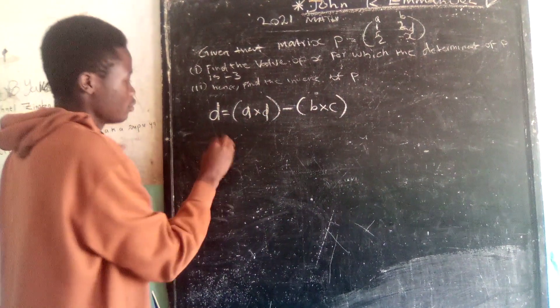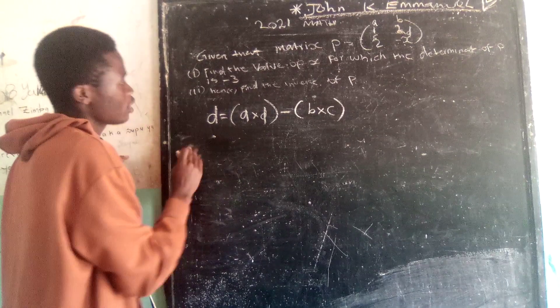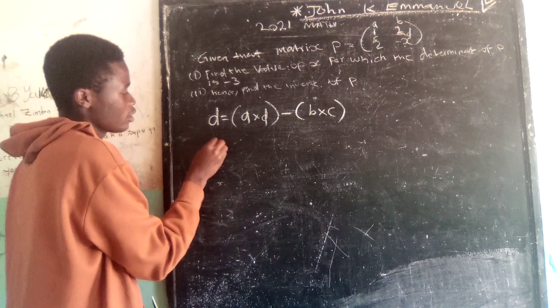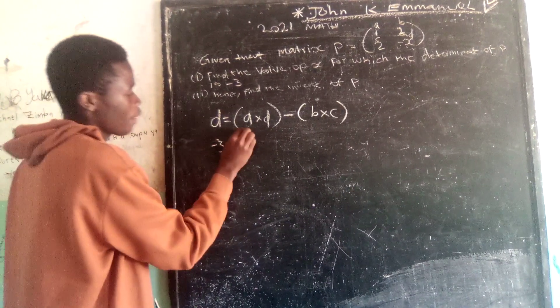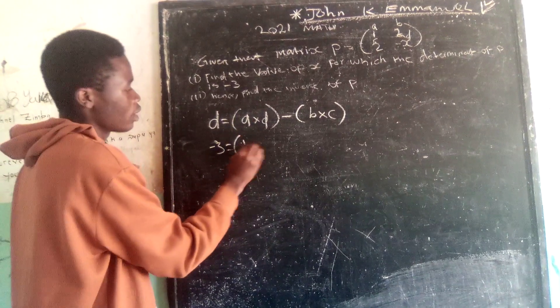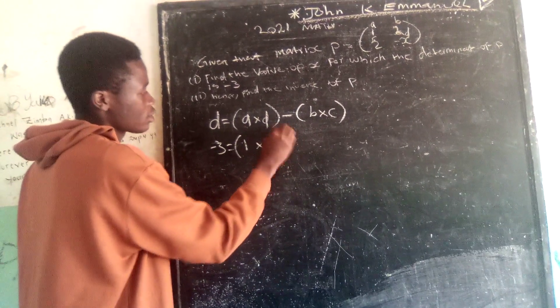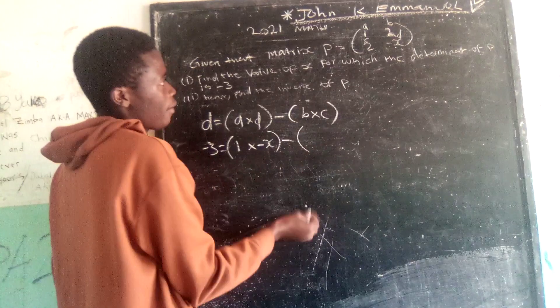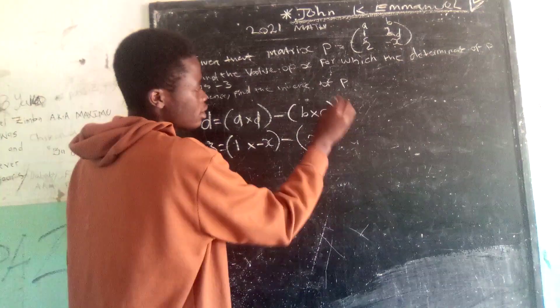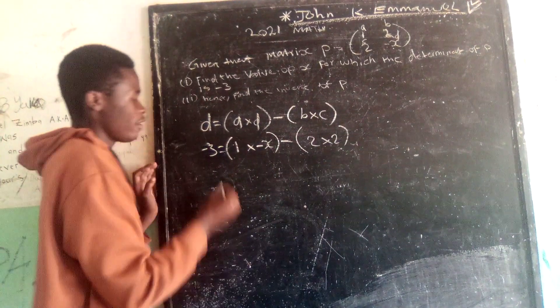The formula for the determinant is that the determinant is equal to A times D minus B times C. So here on our matrix P, we have 1 which is our A, 2B, 2C, then the value of X is our D. Therefore, we are going to substitute. So our determinant will be negative 3. So negative 3 is equal to A will be 1 times D negative X. So it is minus B will be 2 times C will be 2.